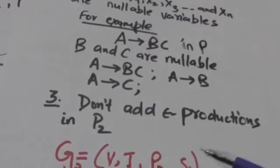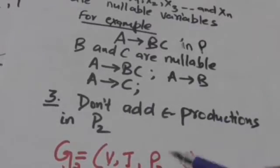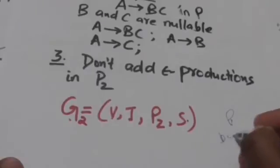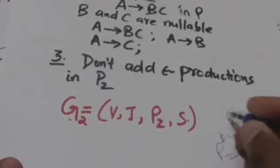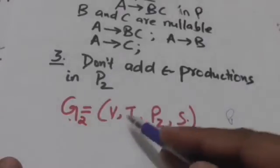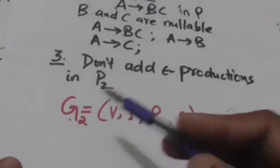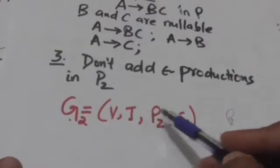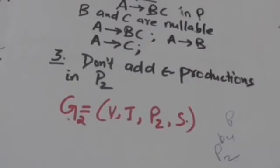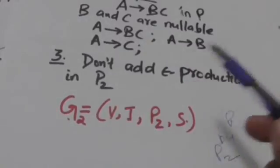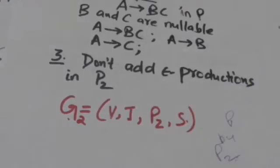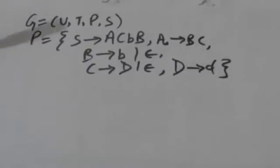In grammar G, replace the set of productions P by the set of productions P2. We will get a new grammar G2, defined by the quadruple V, T, P2, S. G2 is the required grammar obtained by removing empty productions from grammar G.